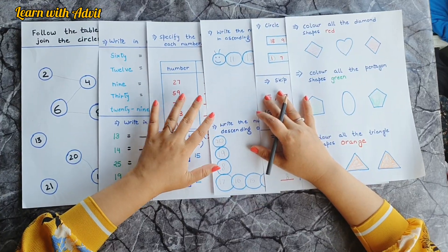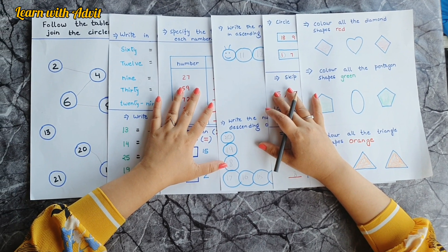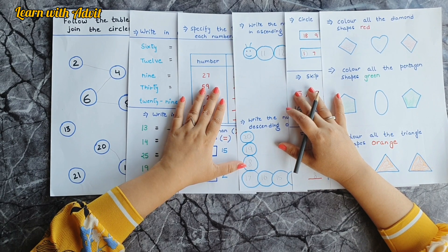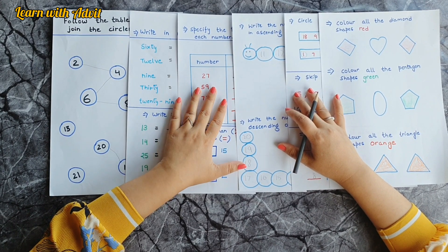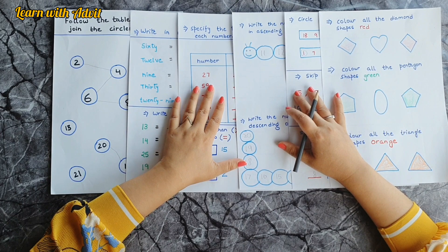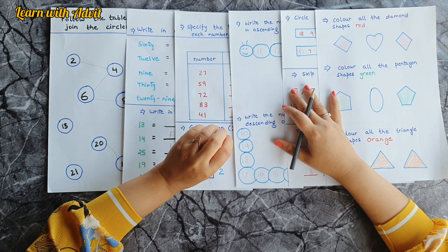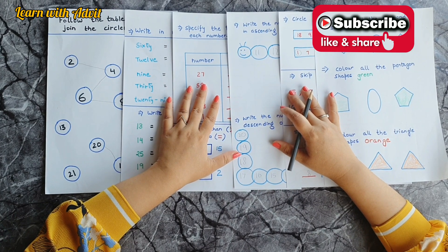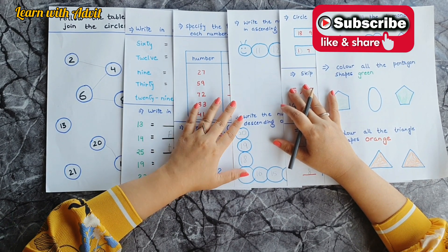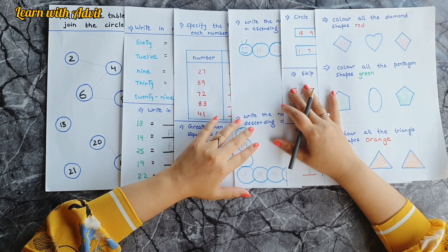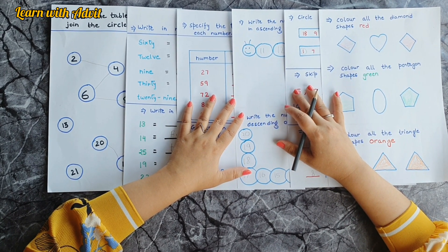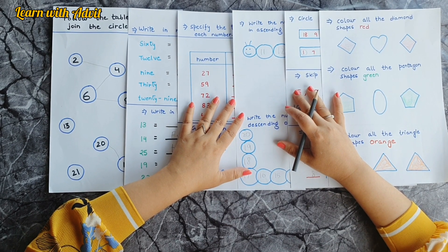I will suggest please include these worksheets on your daily basis practice. If you want to download these worksheets and do with your kids at home, I will provide the link in description below. For more such learning videos, please like, share our video, and subscribe to our channel, Learn with Advit. These worksheets are really good for the age group of four to six. Thanks for watching. See you next time. Bye-bye.